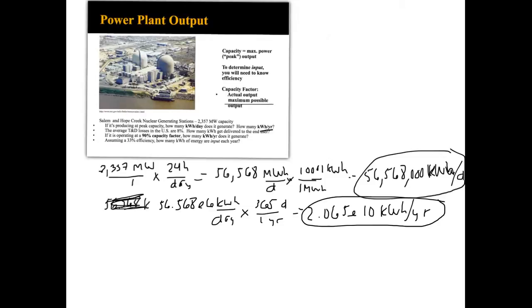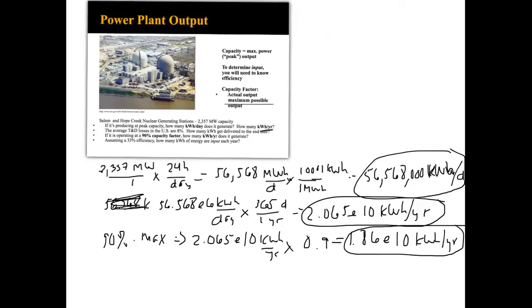So let's actually skip to the third one here. If it's operating at a 90% capacity factor, how many kilowatt hours a year does it generate? So our capacity factor is our actual output divided by our maximum possible output. So really, it's 90% of this. So 90% of the maximum. So it's 2.065 times 10 to the 10th kilowatt hours per year times 0.9, which is going to give us exactly 1.86 times 10 to the 10th kilowatt hours per year. So that is a more realistic number. I mean, 90% is a pretty reasonable capacity factor for a coal-fired power plant because it's baseload. It's operating at pretty full capacity most of the year.